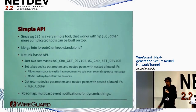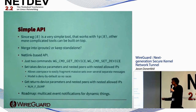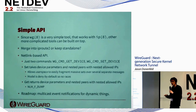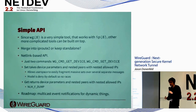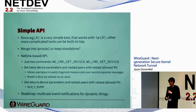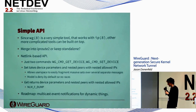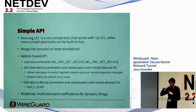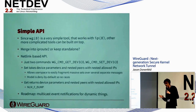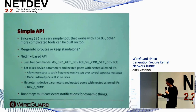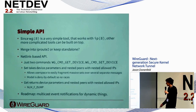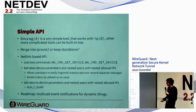The 'wg' tool is a very simple configuration utility — it may eventually be folded into iproute2 or kept standalone. It's the basic building block on which other tools can be built. There's a netlink-based API with just two commands: get (to retrieve all device info) and set (to configure the device). It takes a netlink message with device information, then a nested list of all peers, each with a nested list of allowed IPs, fragmented across multiple SKBs.